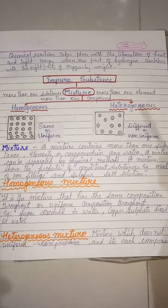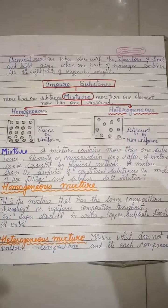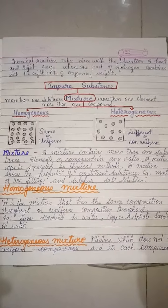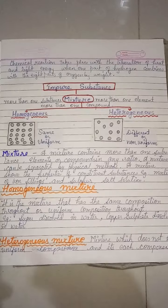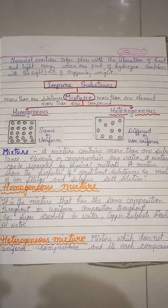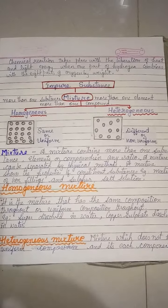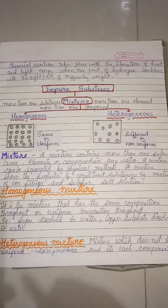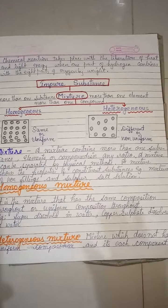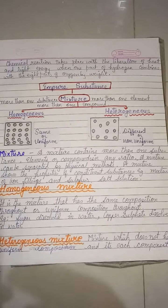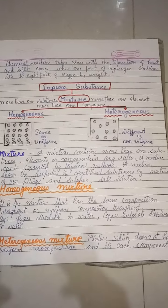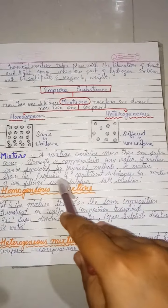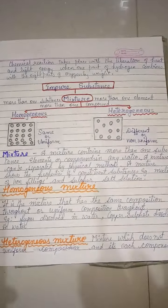A mixture contains more than one substance, element, or compound in any ratio. Mixtures can be separated by physical methods. For example, if you have a mixture of iron nails and sulfur powder, you can separate them with the help of a magnet — the iron nail will stick to it. You can also separate mixtures by sieving or by filtration.